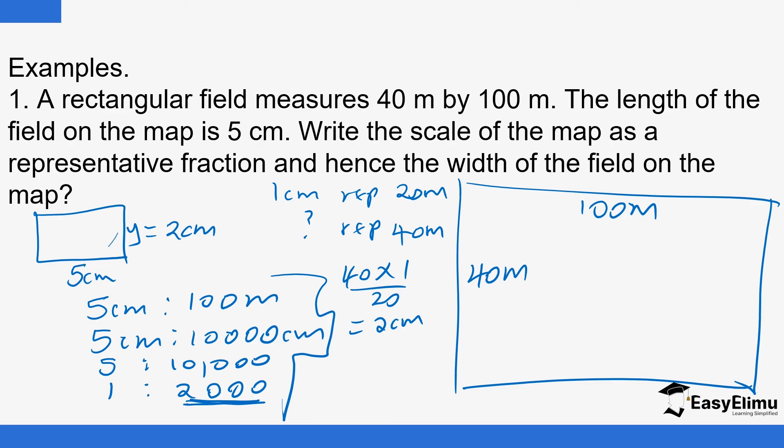So the smaller version of the entire field on the map is 2 centimeters by 5 centimeters.